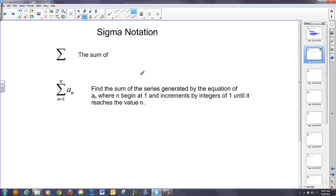So we move on to summation notation from here, or sigma notation. Sigma is this Greek letter, and it means the sum of. A typical sigma notation problem will be in this form. And this says, basically, find the sum of the series generated by the equation given by some a sub n, where n begins with the number one in this case, and increments by integers until I get to a total of n. Let's take a look at a practical application of that and see how that's solved.